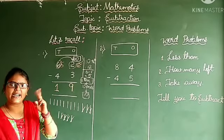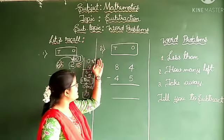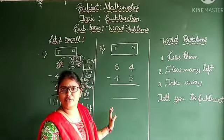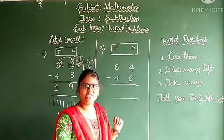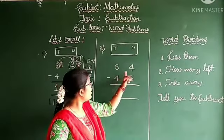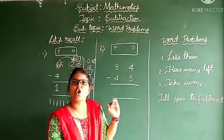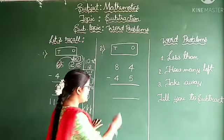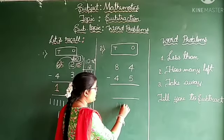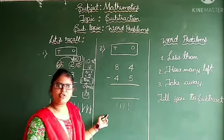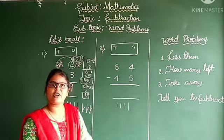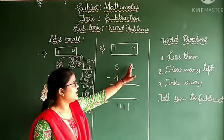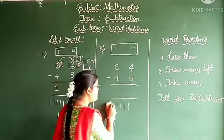Now let us move on to our second problem. In the 1s part, 4 minus 5. Keep 4 lines — 1, 2, 3, 4. You have to strike out 5 lines. Is it possible? No. Therefore 4 minus 5 is impossible.